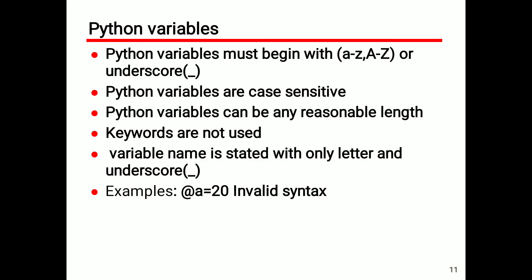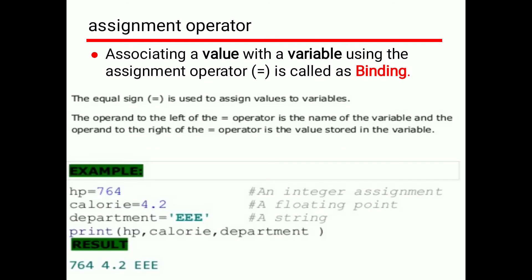Python variables must begin with a letter (small a to z or capital A to Z) or an underscore. Python variables are case sensitive. Python variables can be of reasonable length. Keywords are not used as variable names. For example, 'rate of i = 20' is an invalid syntax because it does not follow the specific naming rules.